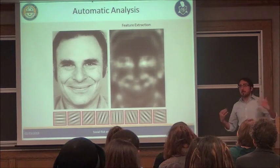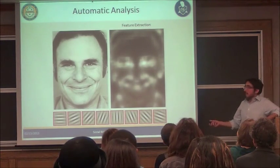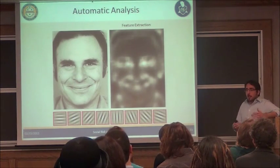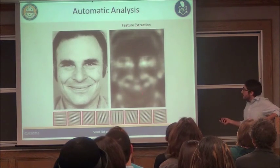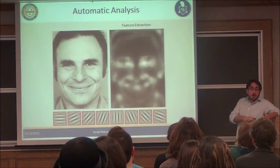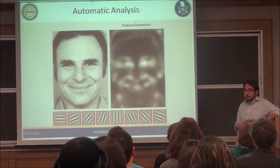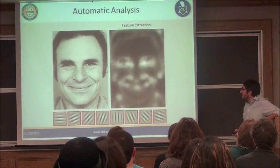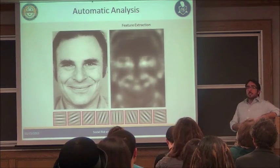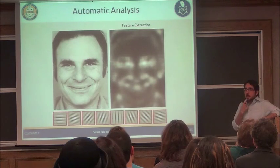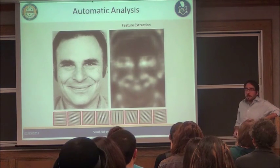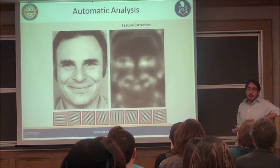We show lots of these processed images to the computer and say: this is what the pattern of a smile tends to look like. We show many examples of smiles and it starts to learn — if the face has these features, it's a smile; if it has these other features, it's not a smile. We do this for all 17 expressions. Then we give it a new image, it says the furrows are there, the mouth is curved, the eyes are narrowed — probably a smile. We call that classification, and then we essentially have an automatic coder.